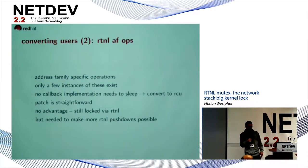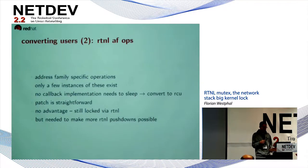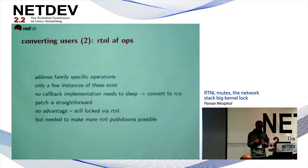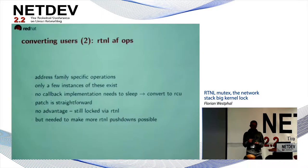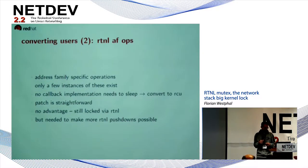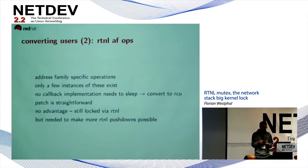One thing that was easy to convert is the AF ops. Basically the RTNL AF ops contain family-specific operations — for instance IPv4 and IPv6. There are not many of these in the kernel, so it was easy to audit all of them, and since not a single callback needs to sleep, we can just protect them with RCU and be done with it.